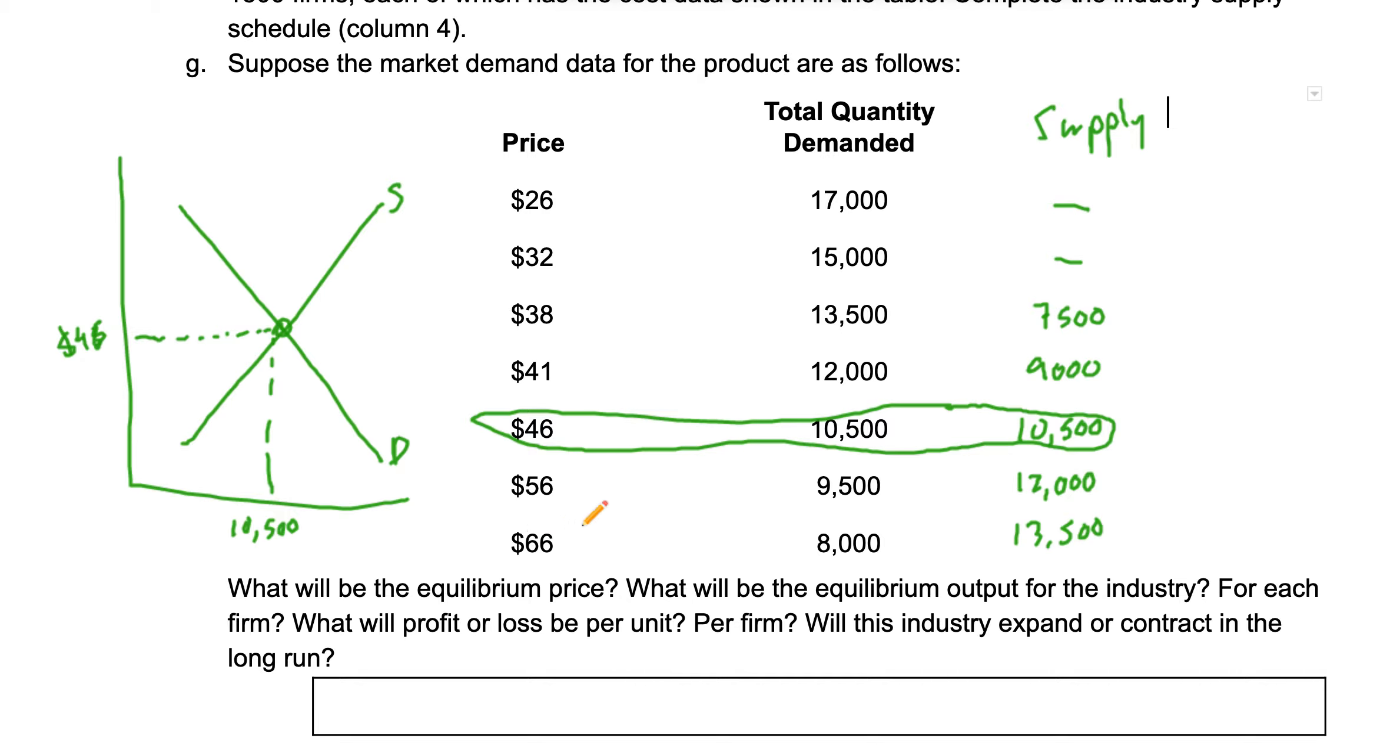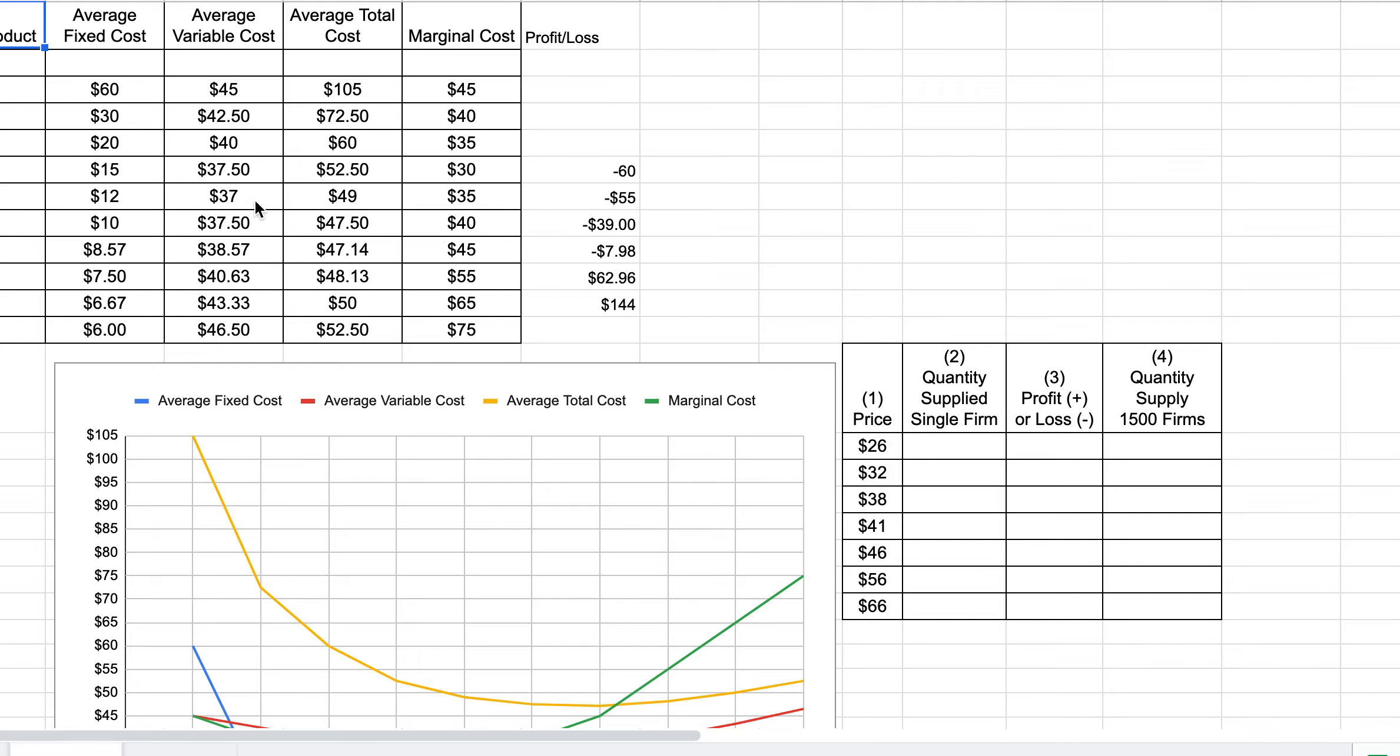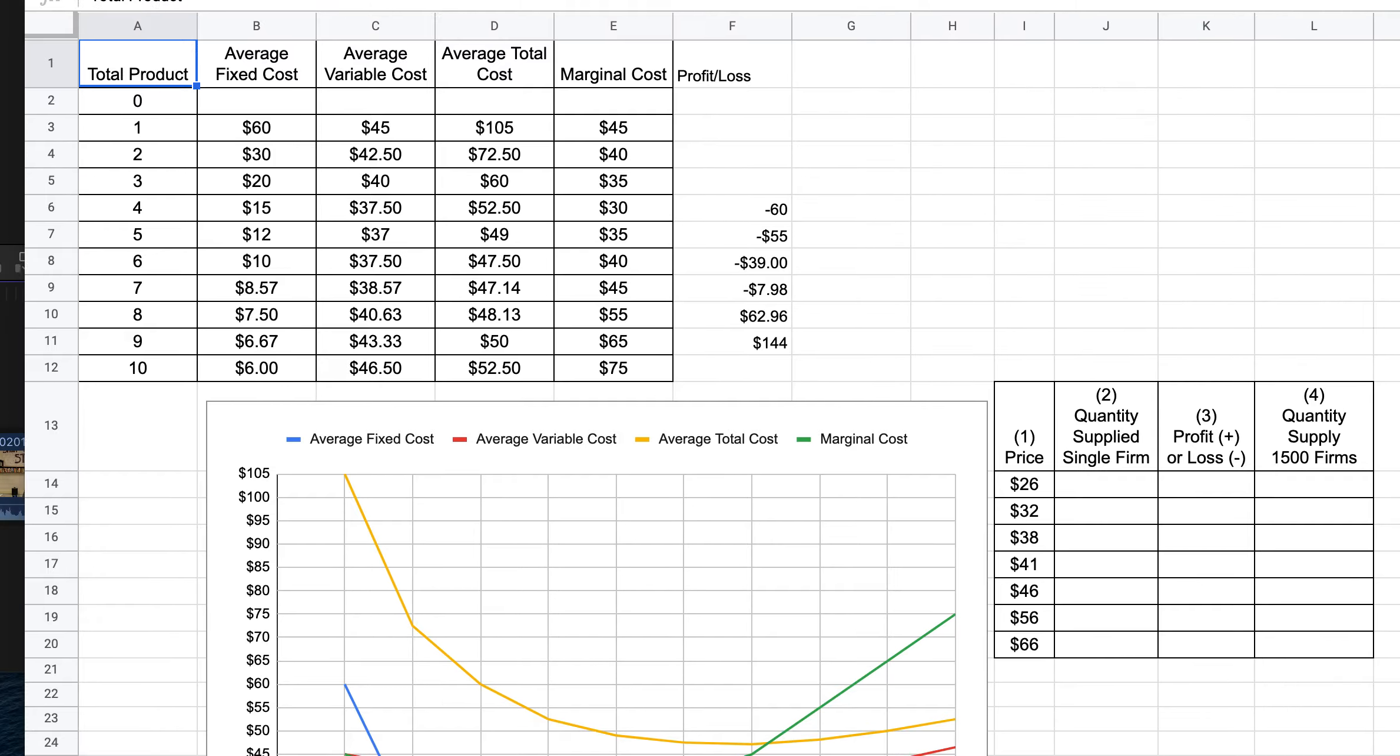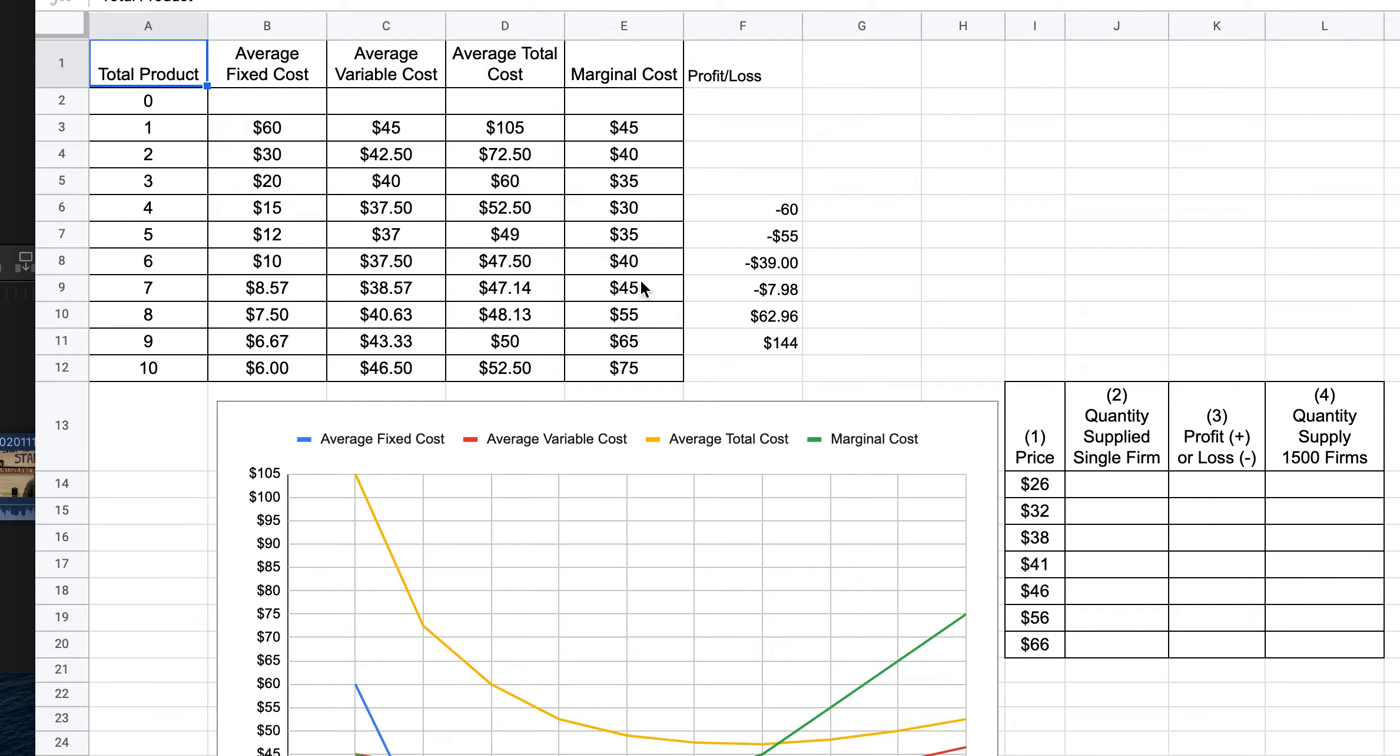So the question now remains: are we making money? What's going on here? So at $46, I'm going to go back to the spreadsheet I had over here. And at $46, let me move this around. At $46...